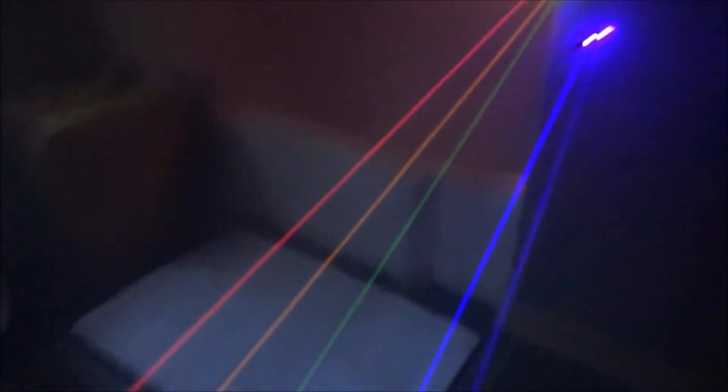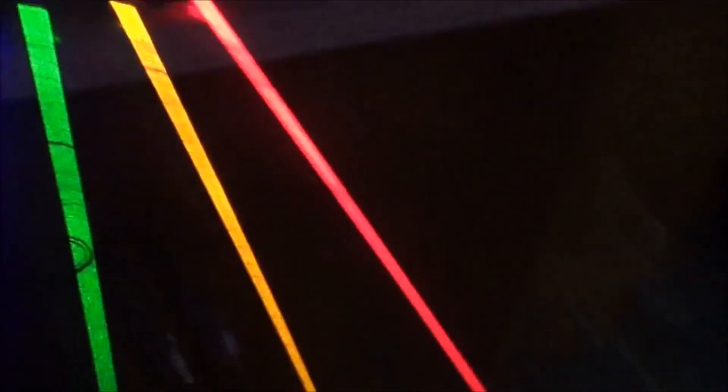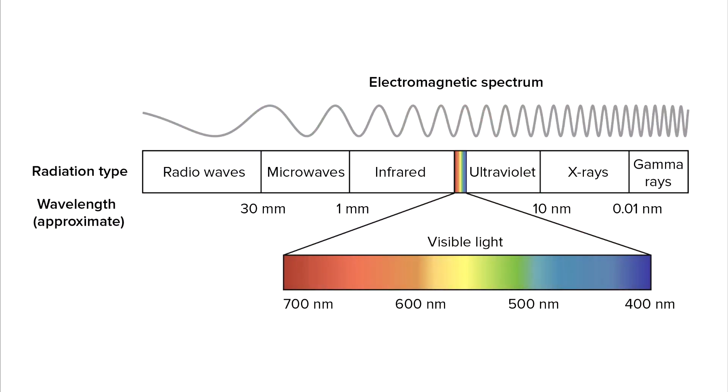So to understand wavelengths, you need to understand light. Light is traveling energy composed of electric and magnetic fields and it behaves like a wave. So this is a good way to visualize it right here. You see those squiggly lines at the very top, that's going to represent your energy, your light.